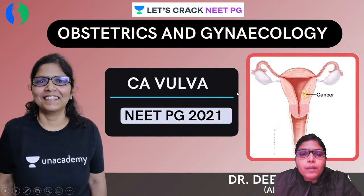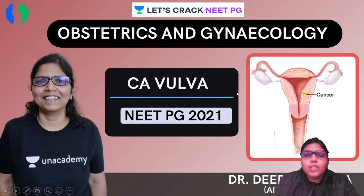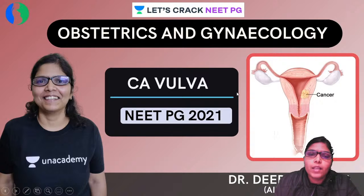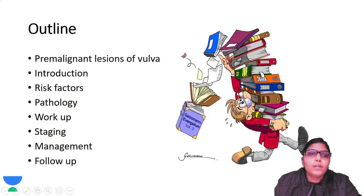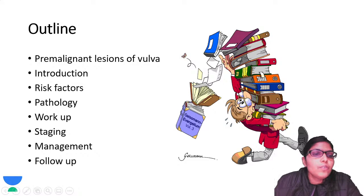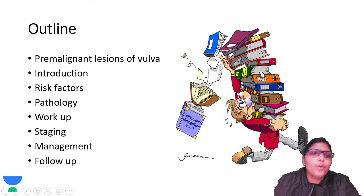Now coming to today's topic: Carcinoma Vulva. This is a topic we don't really read in much detail, but since in the last few years a few questions have been asked - particularly regarding management - I will clarify a few points about the management of CA vulva and a little bit about pre-malignant diseases. The outline of the class will be: pre-malignant lesions, introduction, epidemiology, risk factors, pathology, workup, staging, management, and follow-up. A question has been asked from each of these areas.